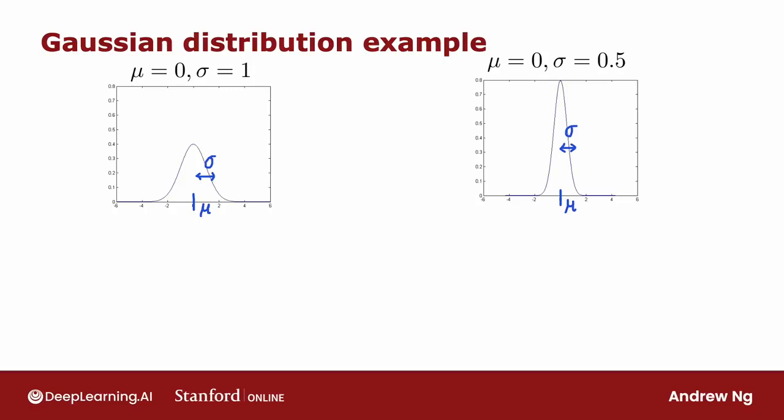You might recall that sigma is the standard deviation, is 0.5, whereas sigma squared is also called the variance, and so that's equal to 0.5 squared or 0.25.